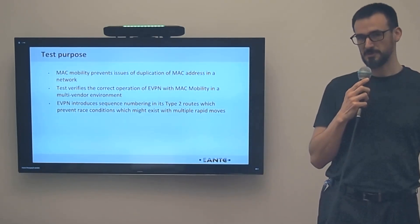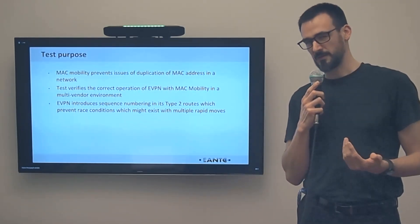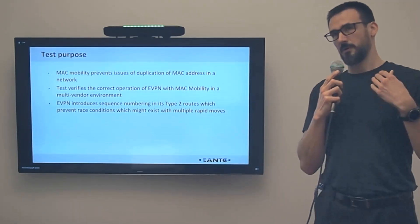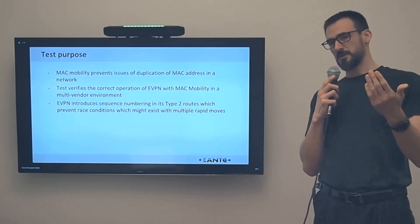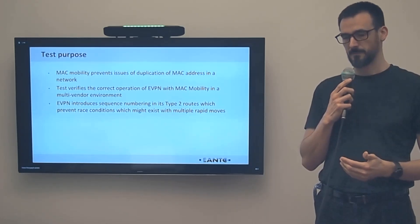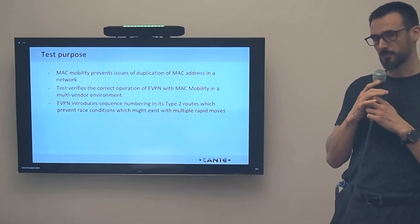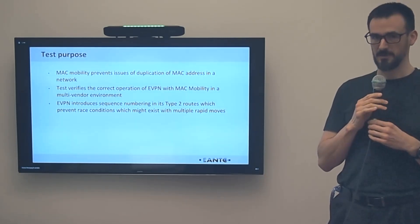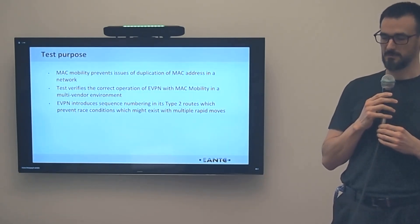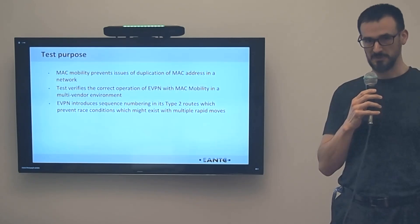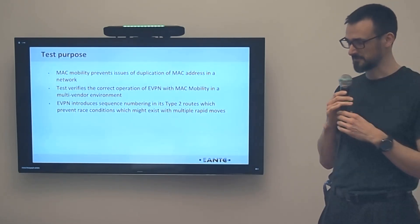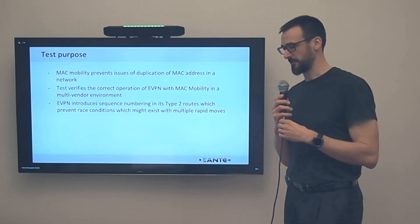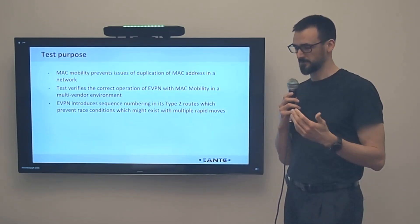Upon receiving a MAC address that learns locally, the PE that has got that MAC address learned locally would therefore advertise it as route type 2 and increment the sequence number. And therefore, all the remote PEs will flush their local MAC address and install it with a next hop of the PE that advertised it last with the highest sequence ID. It provides a much more stable layer 2 environment.